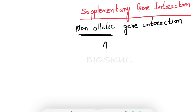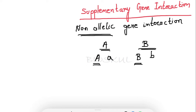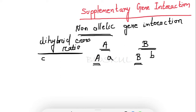Let's say there are two genes: gene A and gene B. For gene A there are two alleles — capital A and small a. Similarly, capital B is one allele and small b is another allele for gene B. Non-allelic gene interaction means the alleles of one gene interact with alleles of another gene. In non-allelic gene interaction you will find a deviation of the dihybrid cross ratio, which is 9:3:3:1.